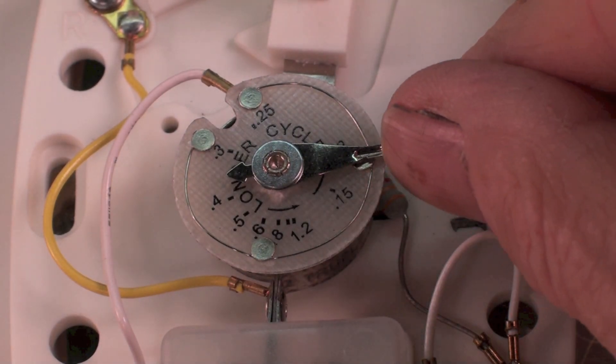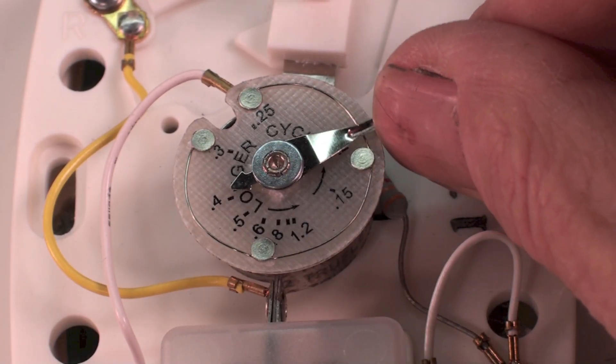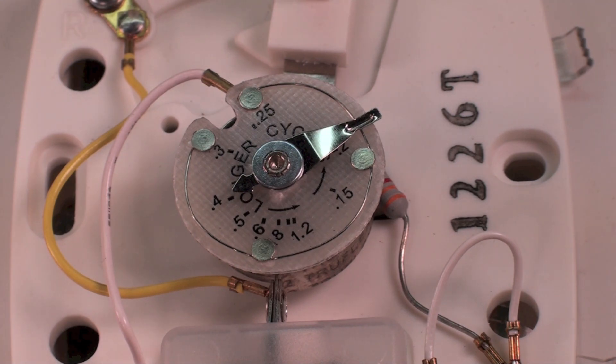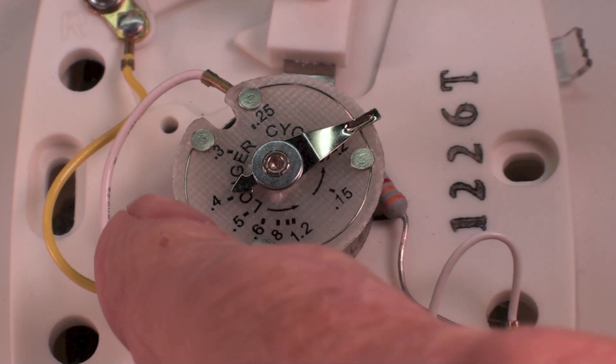That's what these little marks are here - that's four tenths of an amp, five tenths, six, and so on.